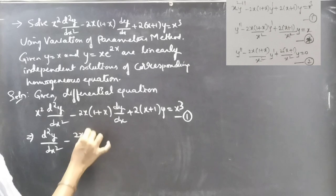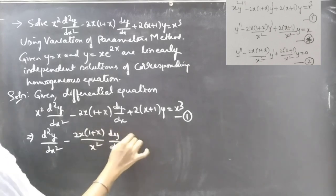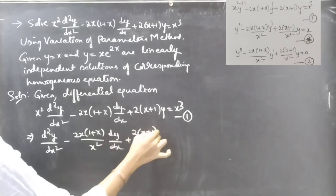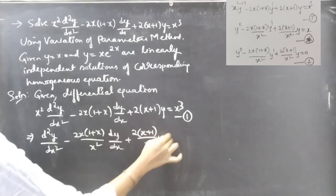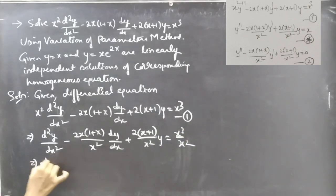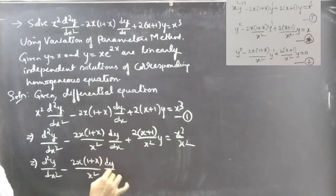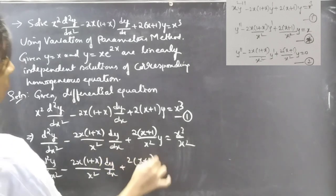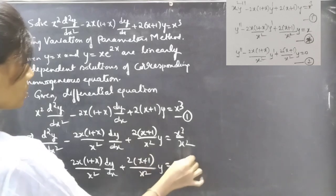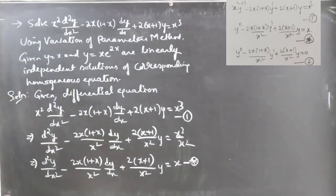Dividing through by x² gives: d²y/dx² minus 2x(1+x)/x² times dy/dx plus 2(x+1)/x² times y equals x. Consider this as equation asterisk.